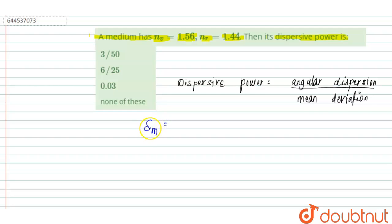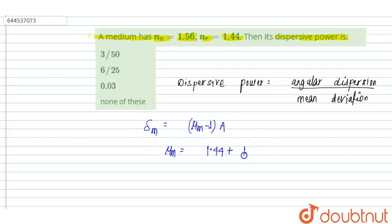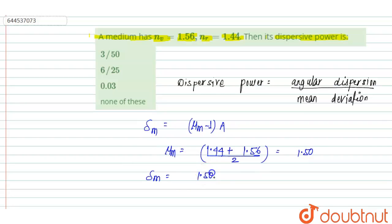First, we calculate the mean deviation. Mean deviation is denoted as delta m, and delta m equals (μm minus 1) into prism angle A. The value of μm is calculated as (μr + μv) / 2, which is (1.44 + 1.56) / 2 = 3/2 = 1.50. So mean deviation equals (1.50 - 1) into A, which is 0.5A.